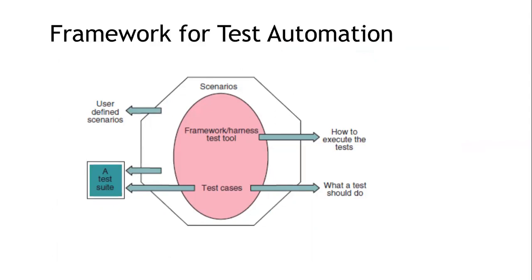Using the terms we have seen for testing, we can draw the framework for test automation. In the middle part is the scenario, which consists of the framework, the test tools, and the test cases. The scenario defines how the test cases have to be executed, and should be defined by the user. The framework defines how to execute the test cases. Test cases define what the test should do. The combination of scenario and test cases is called the test tool. This is the framework for test automation.